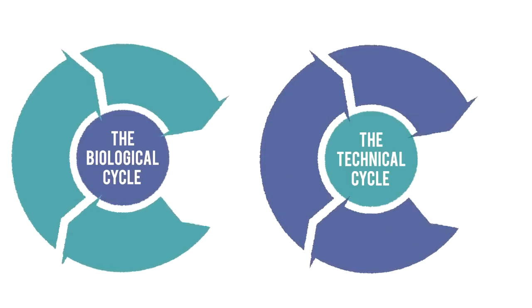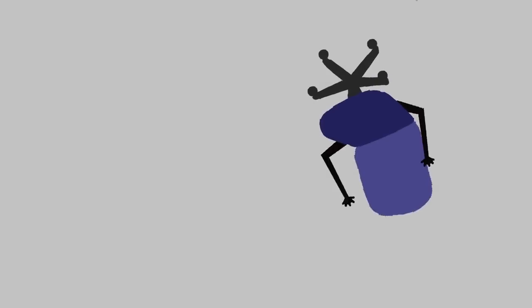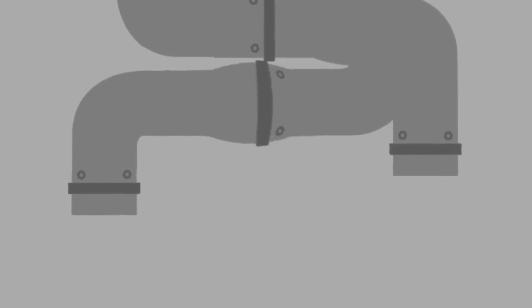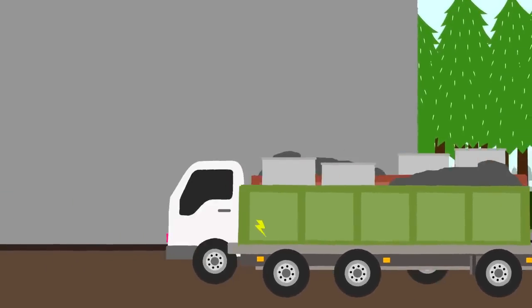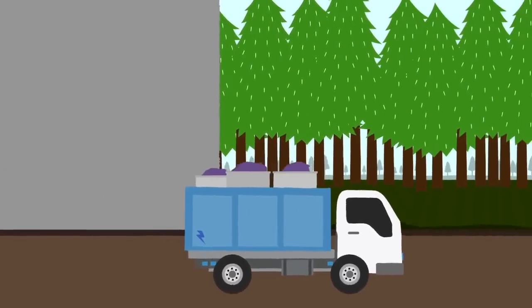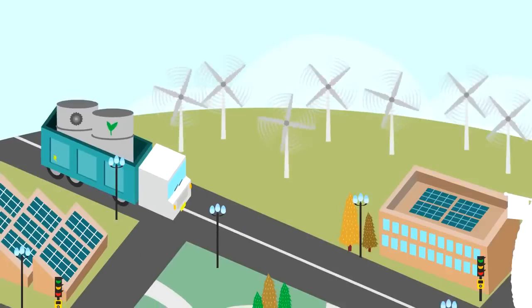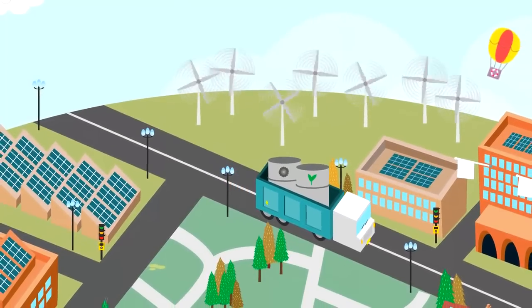Now let's put these two cycles together. Imagine if we could design products to come back to their makers, their technical materials being reused and their biological parts increasing agricultural value. And imagine that these products are made and transported using renewable energy. Here we have a model that builds prosperity long term. And the good news is there are already companies out there who are beginning to adopt this way of working.